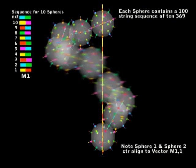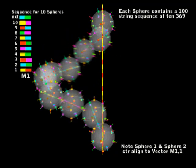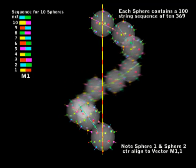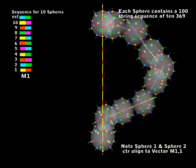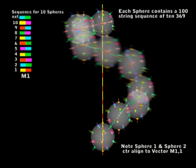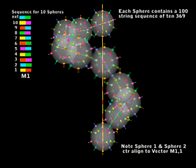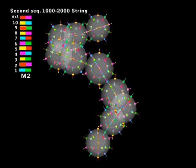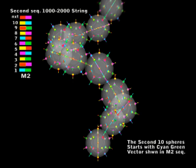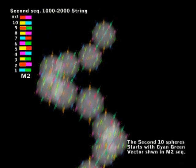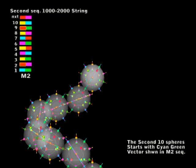Now you can see that the red and yellow vector runs between the center of sphere 1 and right through the center of sphere 10. Isn't that something? So now we've made another animation, and we will see the 10 spheres positioning themselves to the vectors of the M2 sequence.